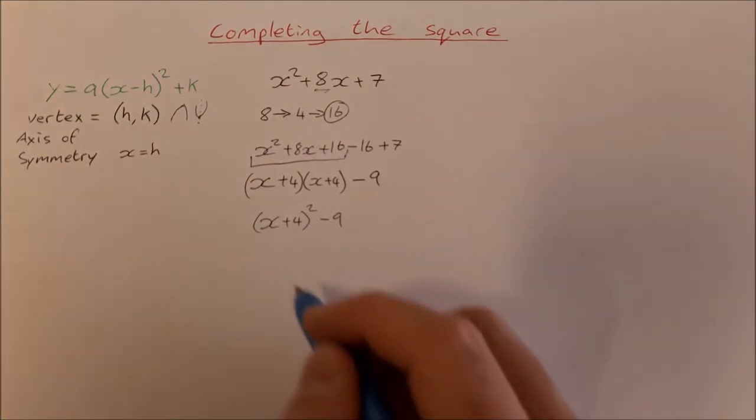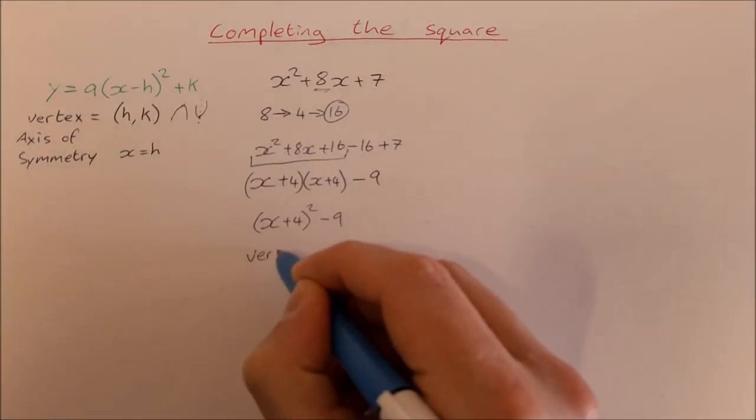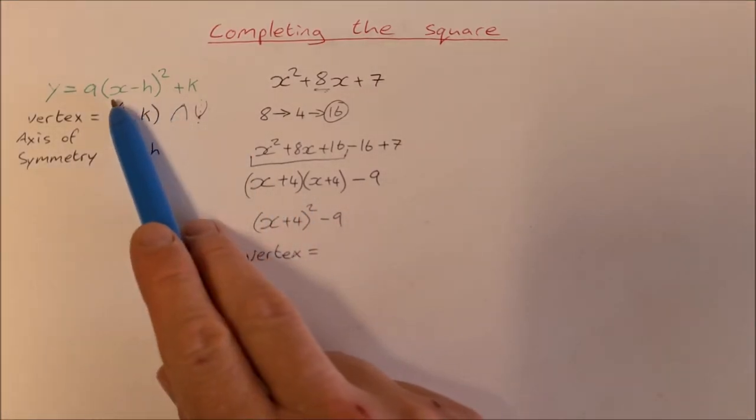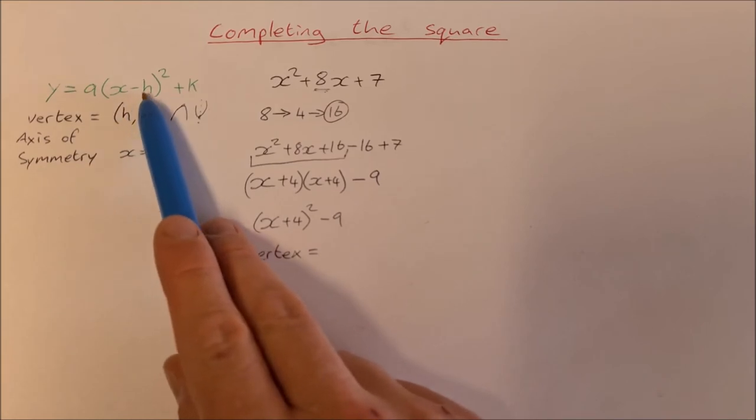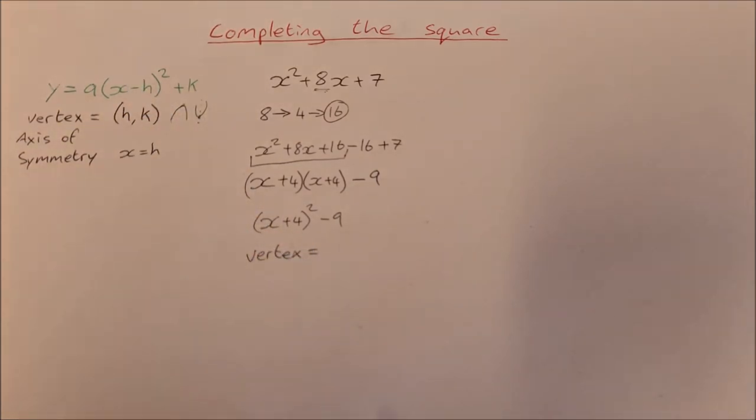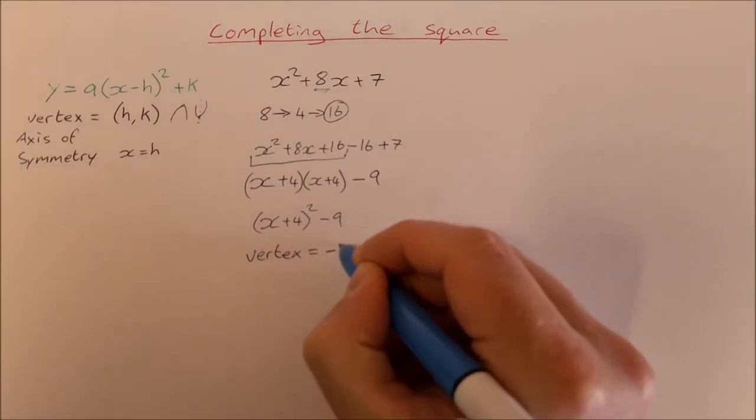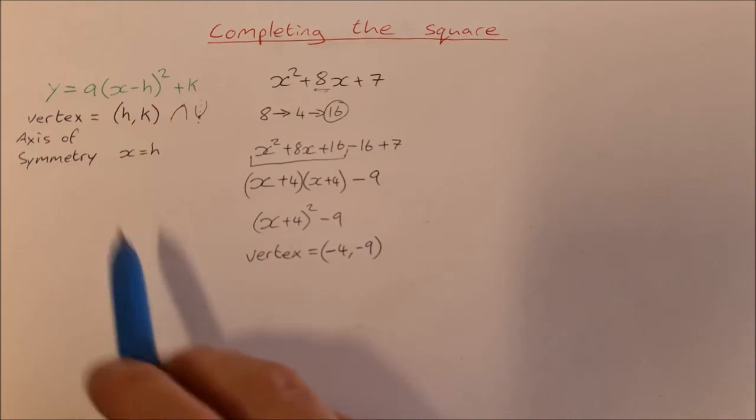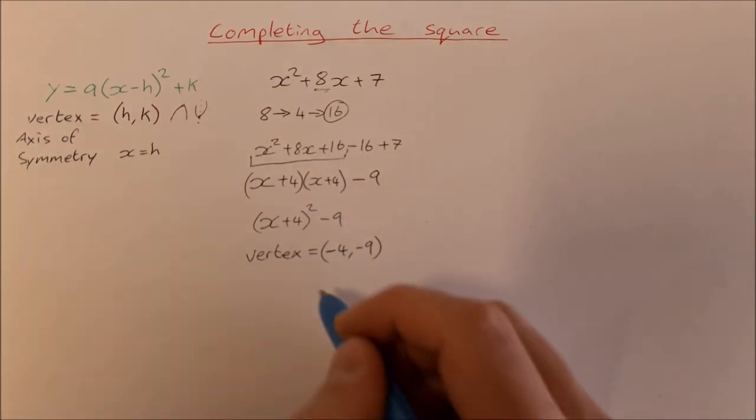Now I know that my vertex is equal to... In the general form it's minus h and plus k, so it's the opposite sign to h. Here I have plus 4, so that means my vertex is (-4, -9). And I know also that my axis of symmetry is x = -4.